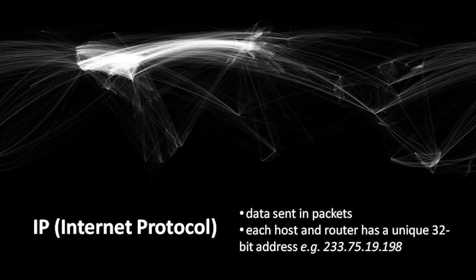Currently, at most, we can have a little bit over 4 billion computers all connected to the internet at once. The way you see these addresses written is a little peculiar. 32 bits is 4 bytes — 32 divided by 8 is 4 — and an individual byte can be expressed as a number between 0 and 255. So we write these 4 numbers separated by dots, and that's an IP address. For example, an IP address will look like 233.75.19.198. Notice that all of those numbers are less than 256.